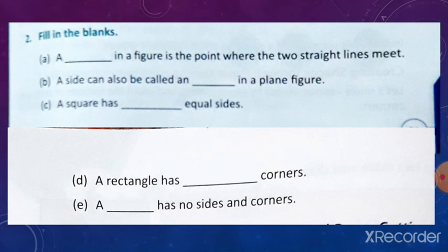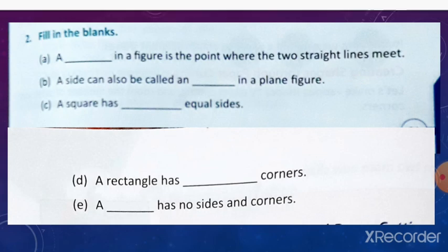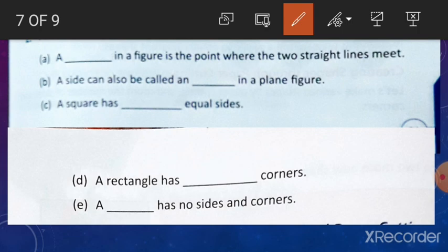Fill in the blanks. A blank in a figure is the point where the two straight lines meet — this is called corner. C-O-R-N-E-R. A side can also be called an edge in a plane figure. E-D-G-E.